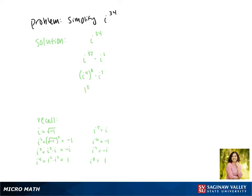So we established i to the 4th is 1. That makes this 1 to the 8th power, and i squared is negative 1. 1 to the 8th is 1, times negative 1 gives us negative 1. So i to the 34th is equal to negative 1.